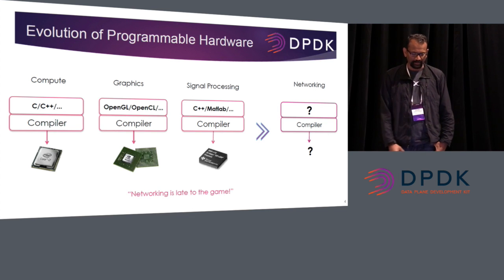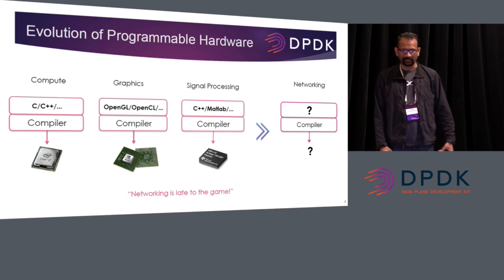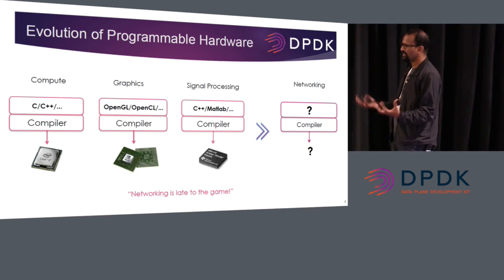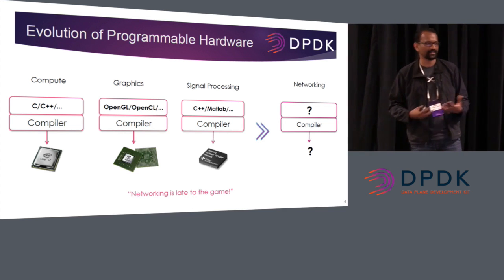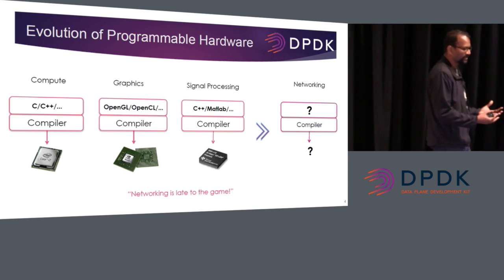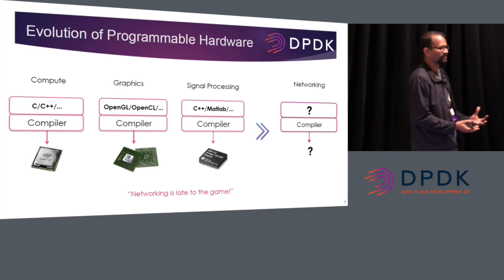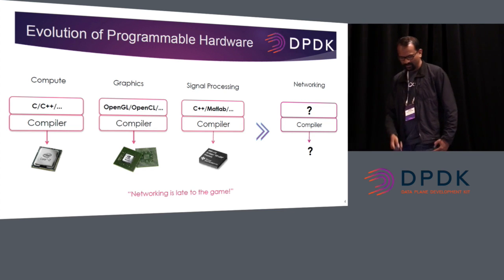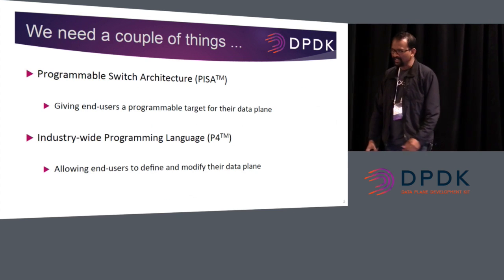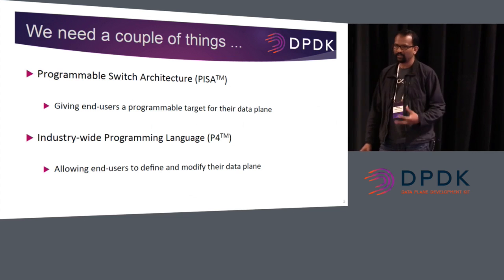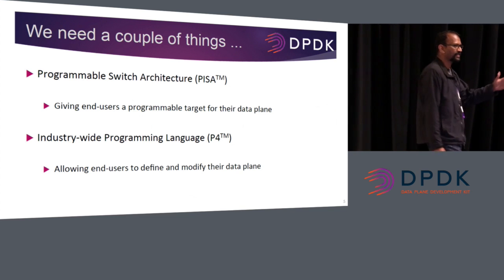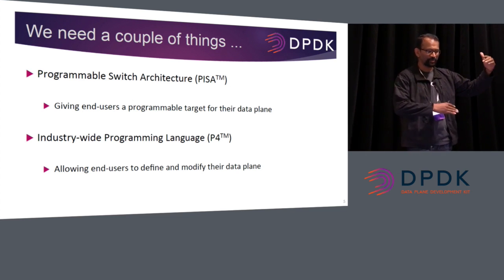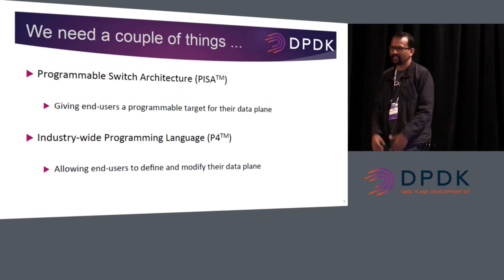But networking, unfortunately, is late to the game. We don't have a networking domain-specific programming language that is easy to use, and we don't have a networking domain-specific processor that is easy to use. So what do we need to solve this problem? We need a couple of things. If you remember the previous slide, there are two question marks — one about the language, one about the target.